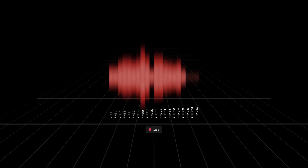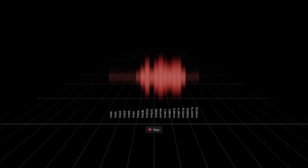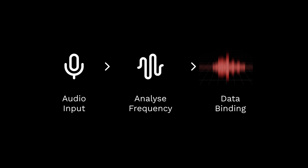An audio visualizer uses bars to represent different sound frequencies. The height of each bar is controlled by the volume of its corresponding frequency. Therefore, we need to capture the audio, analyze the loudness of each frequency, and then translate this data to drive our Rive animation.